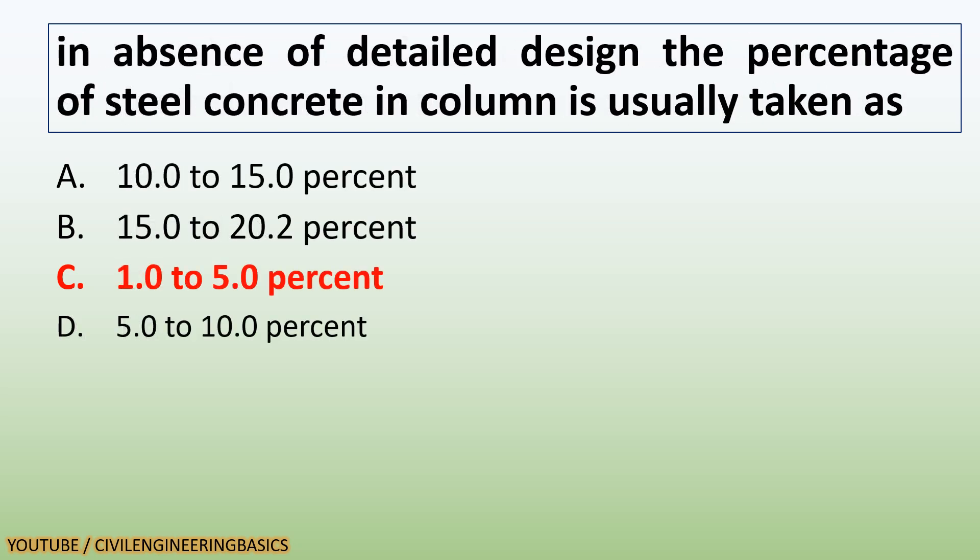In absence of detailed design, the percentage of steel in concrete column is usually taken as 1.0 to 5.0%.